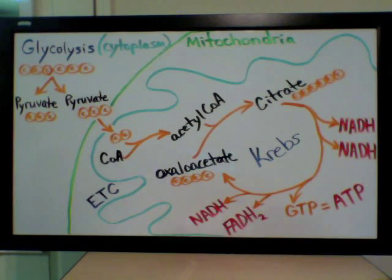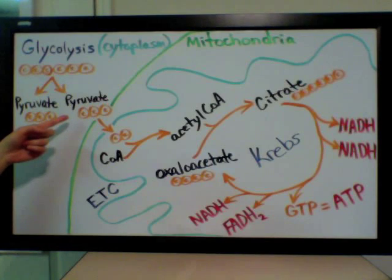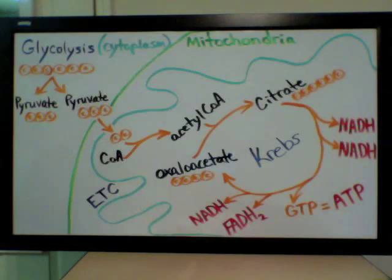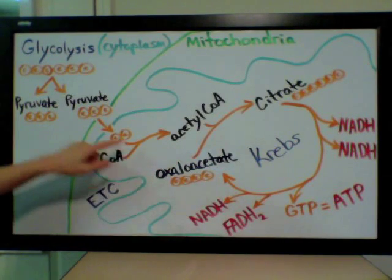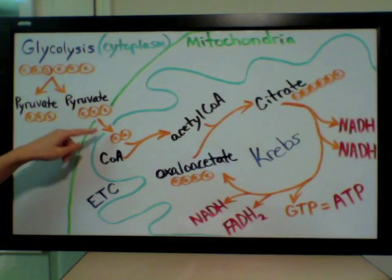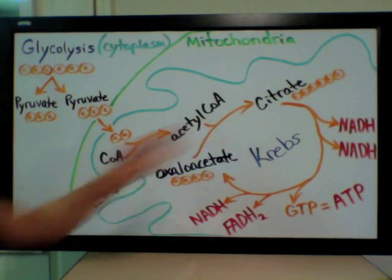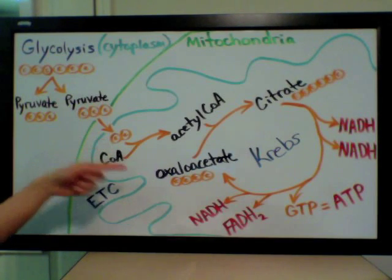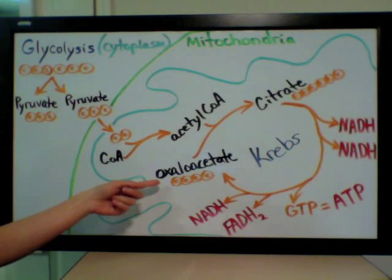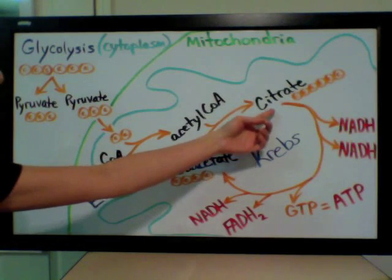Glycolysis is just the splitting of a glucose molecule — a six-carbon molecule — that gets split into two three-carbon molecules called pyruvate. In the presence of oxygen, pyruvate enters the mitochondrial matrix and is oxidized to a two-carbon compound that binds with coenzyme A to form acetyl-CoA.